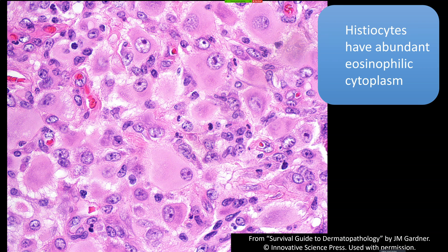Oftentimes the cytoplasm of these big dense pink histiocytes has a kind of two-toned — not to be confused with Touton giant cells, but a double-toned — color. They have a more purpley or lavender area in the middle and then a more pale pink towards the outside. It's a little hard to get a good picture of, but once you recognize it, it's a very distinct look that these histiocytes have.